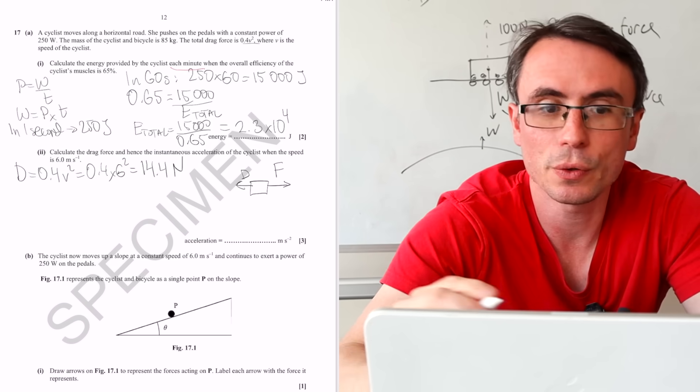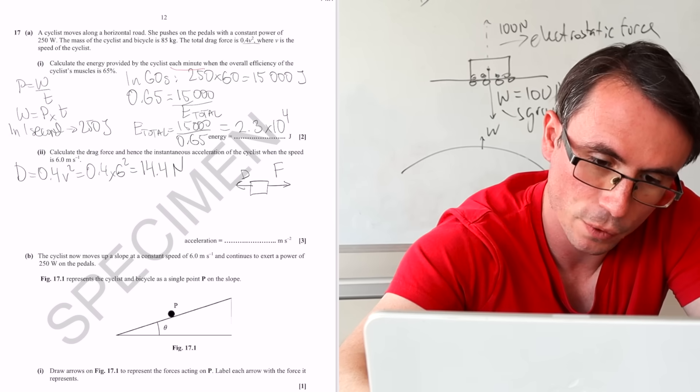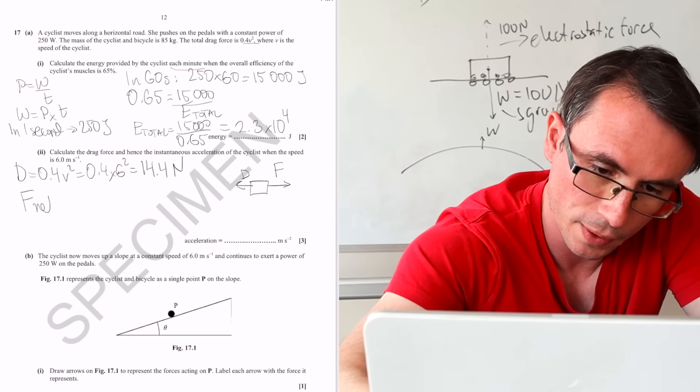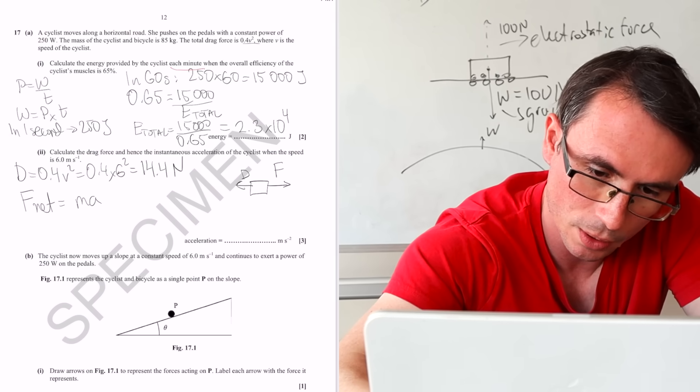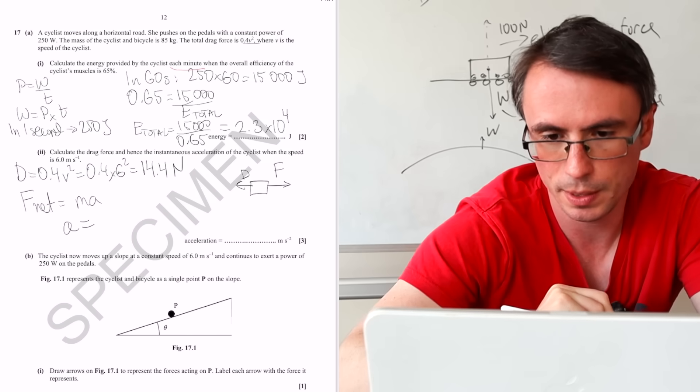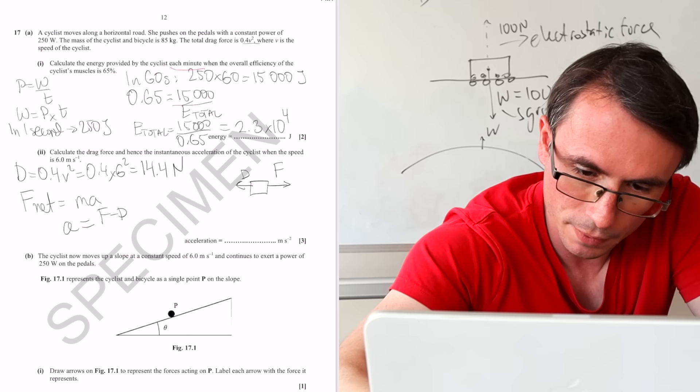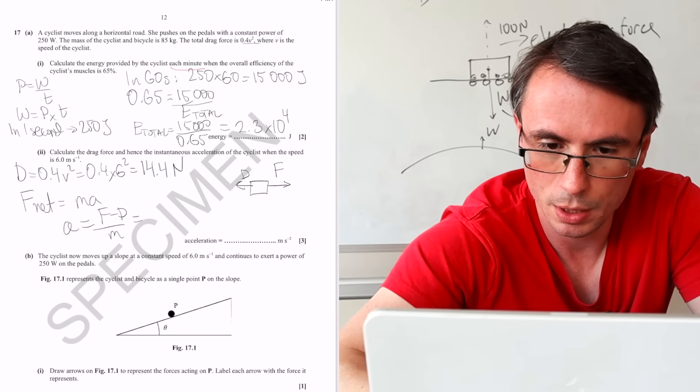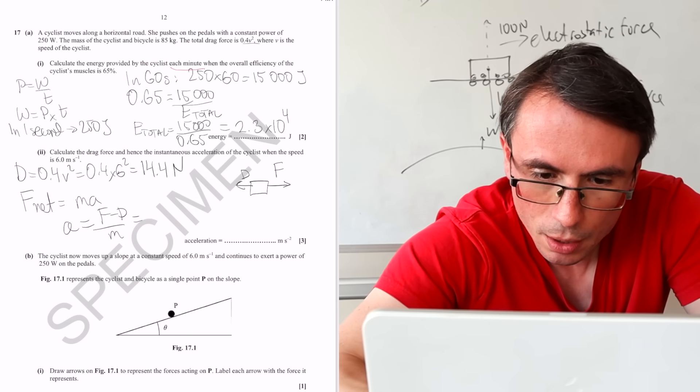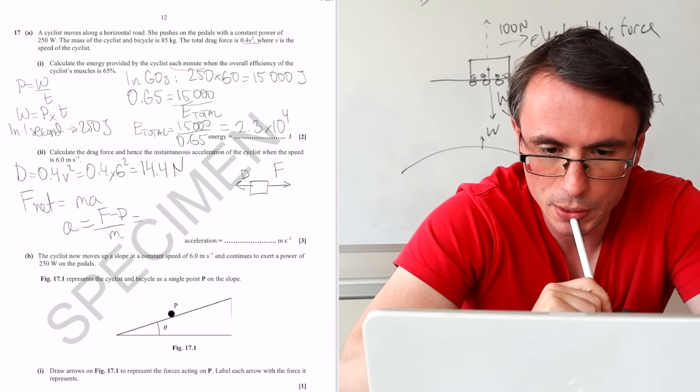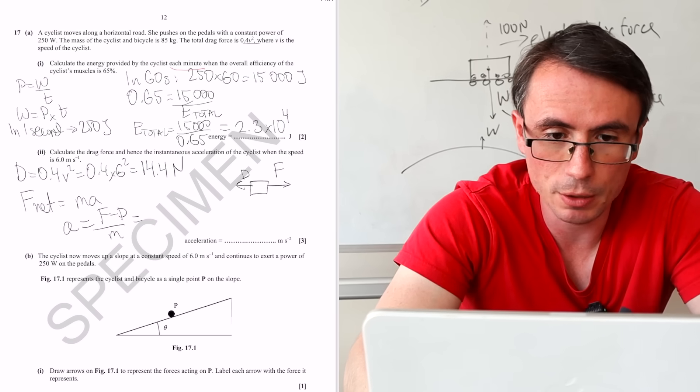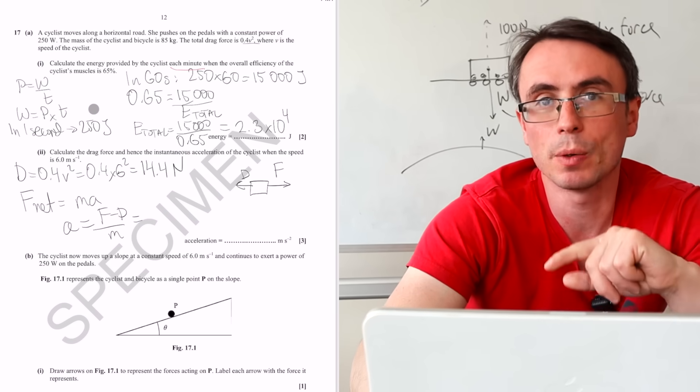The acceleration, we're going to use Newton's second law in the form that the net force, F net, is mass times acceleration. Now, instantaneous acceleration will be F minus D divided by M, which is going to be... We don't have the force just yet, but we can figure it out because we know the constant power and we know the speed.